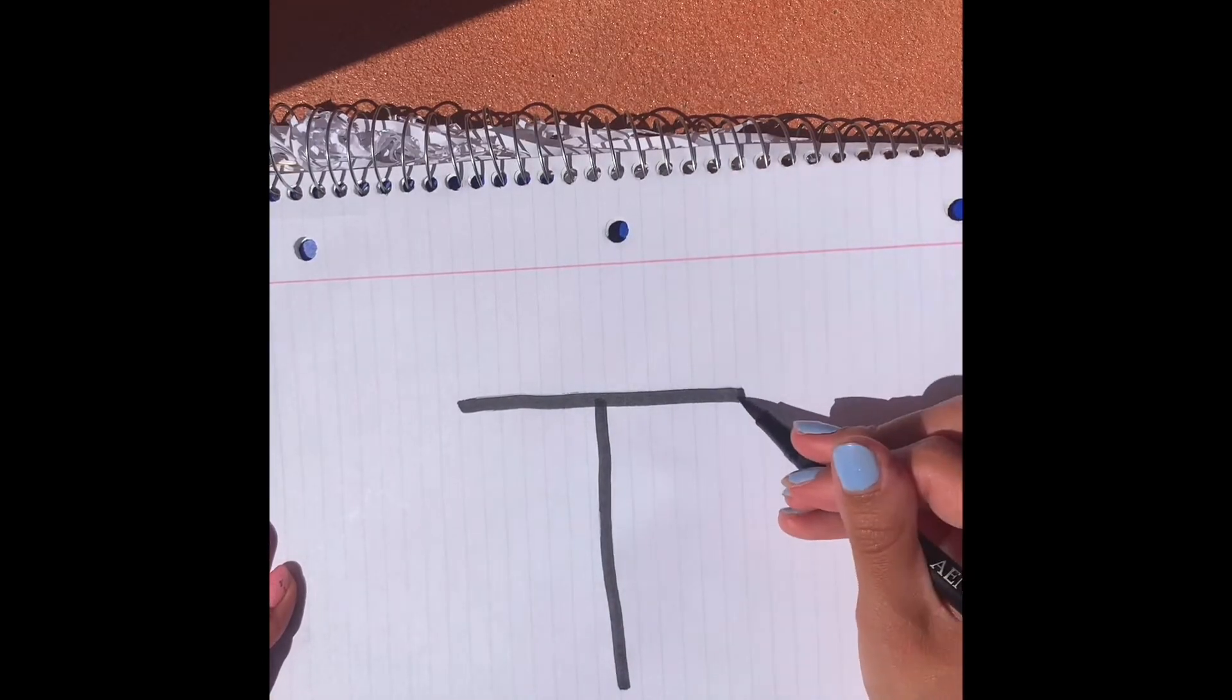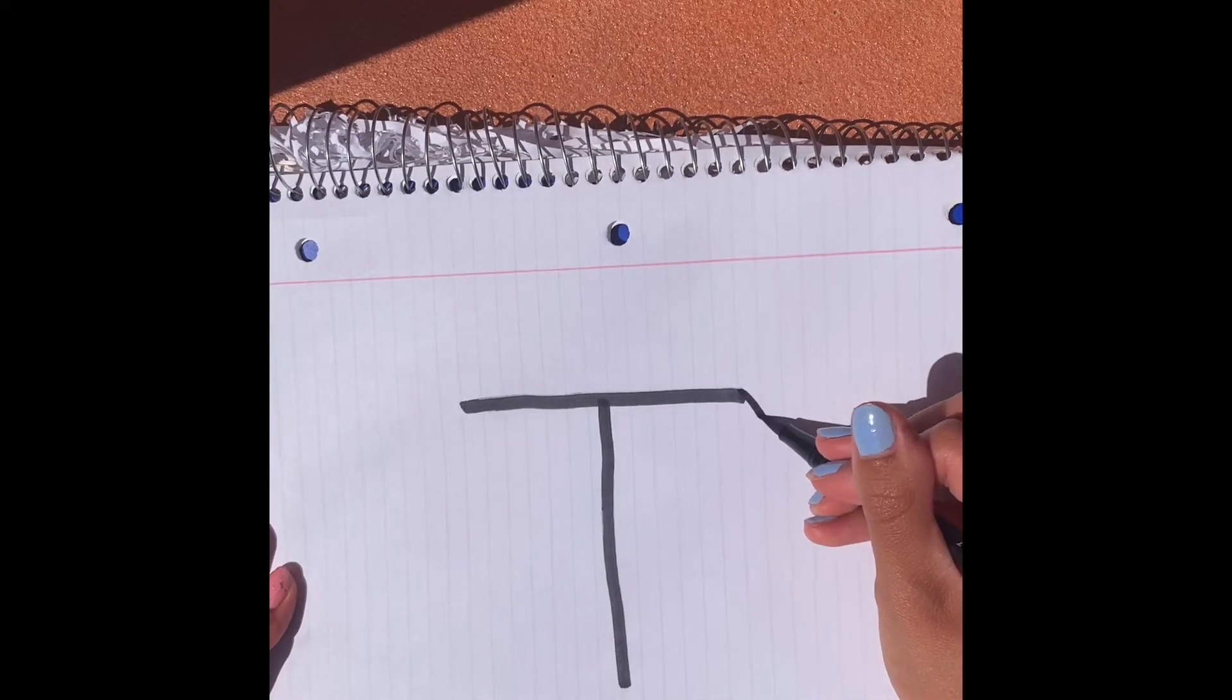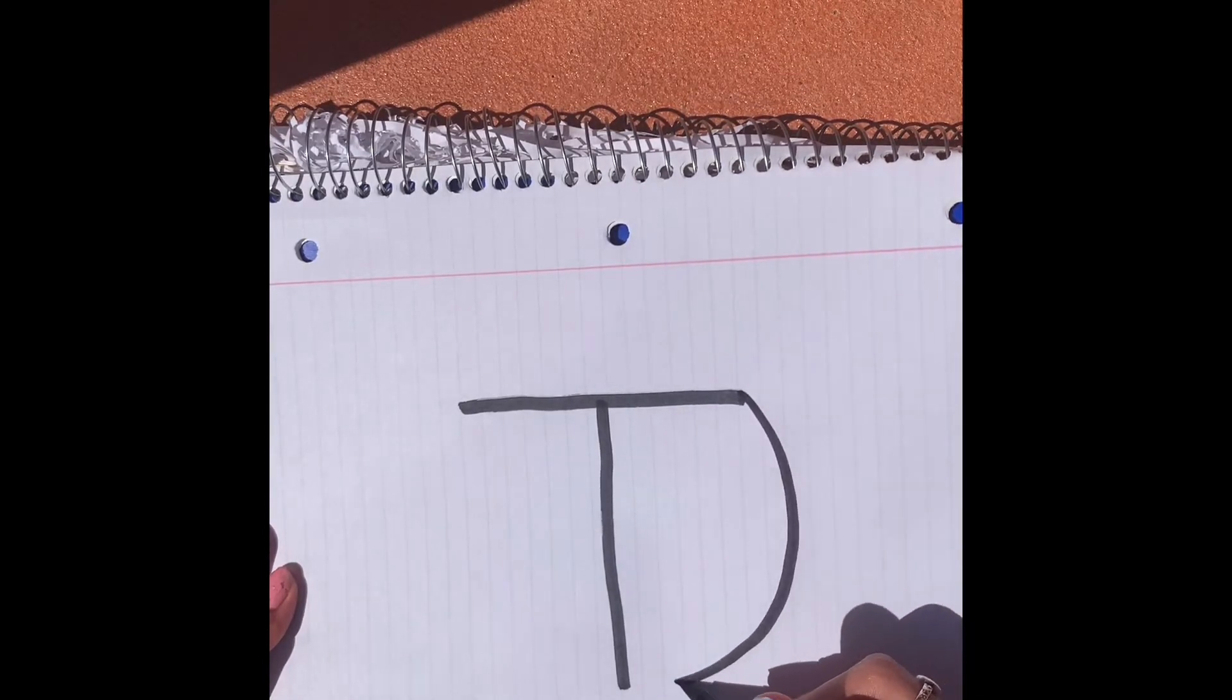And then you're going to want to take this end of the T and connect it to this end of the T. And you're going to do that in kind of a semi-circle shape.